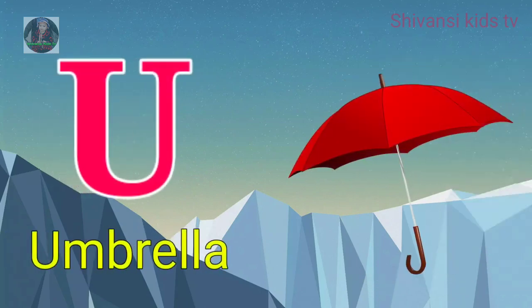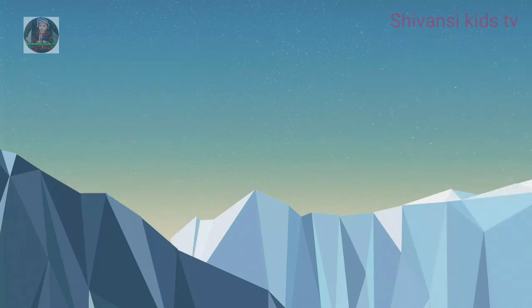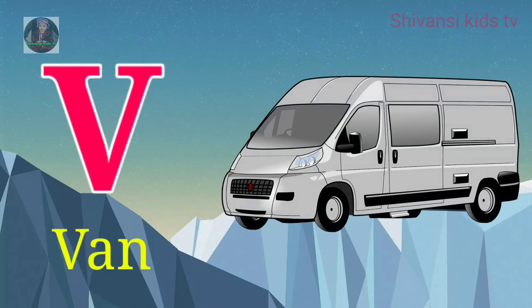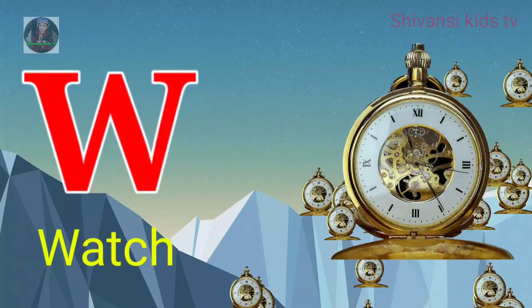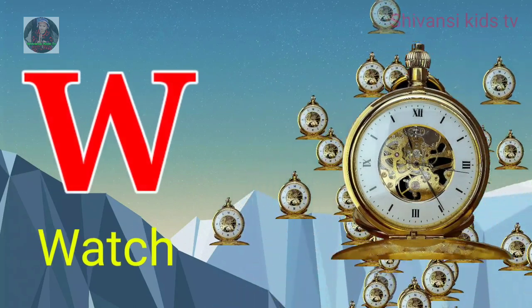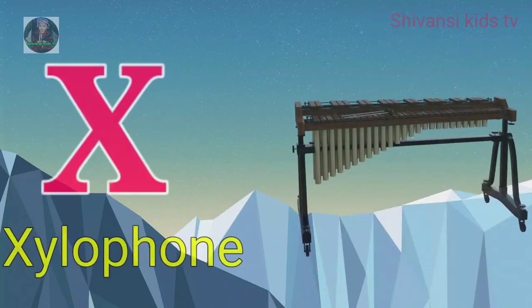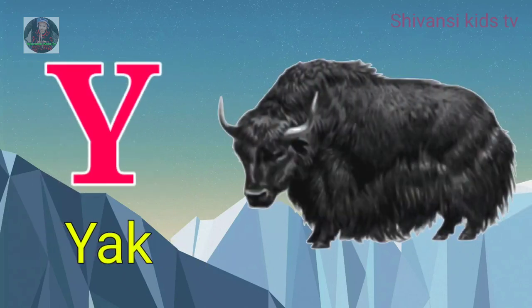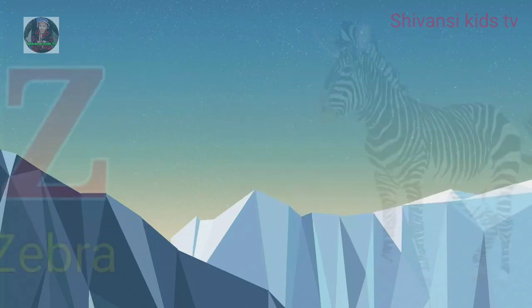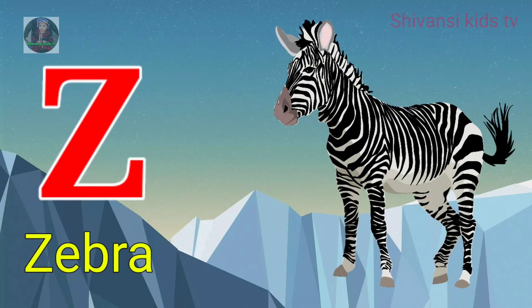U for umbrella, B for man, W for watch, X for gelo phone, Y for yard, Z for zebra.